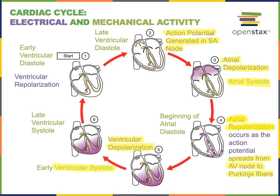Ventricular repolarization follows at the end of the action potential and leads to ventricular diastole. Ventricular systole and ventricular diastole are subdivided into early and late stages. During early ventricular systole — also known as isovolumetric contraction — the volume of blood inside the ventricles does not change. Then during late ventricular systole, blood is forced out of the ventricles into the arteries, and this is also known as ventricular ejection.